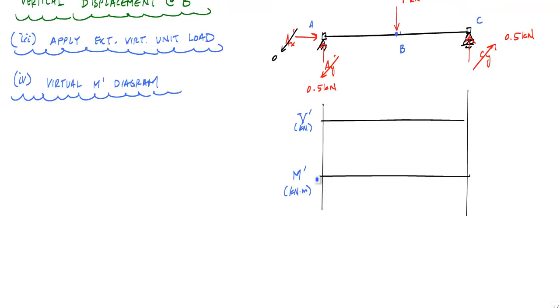And my shear diagram is just going to go up 0.5 kilonewtons all the way across to the concentrated force, then down 1 kilonewton, which will get me to negative 0.5,